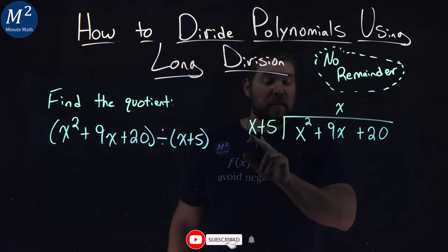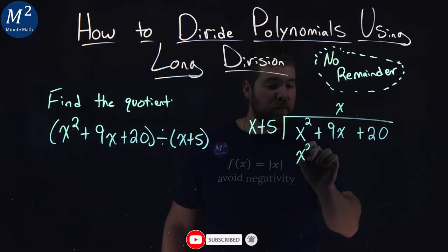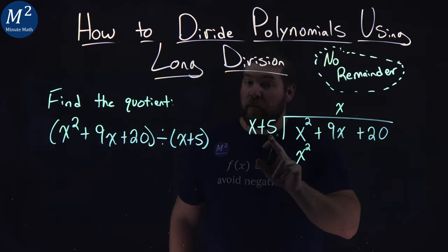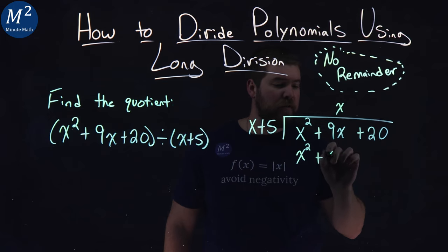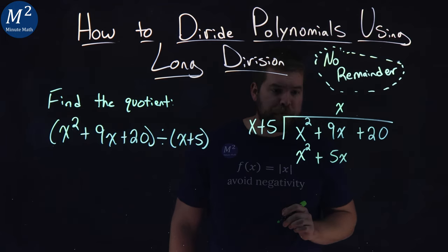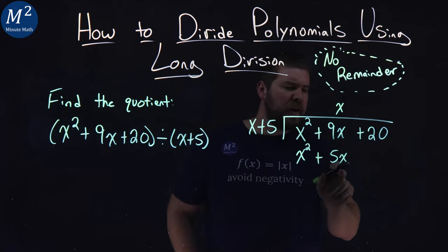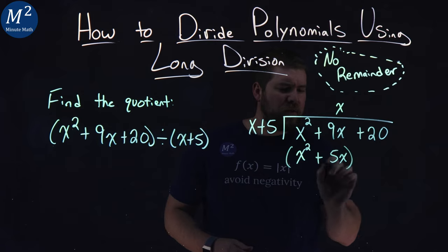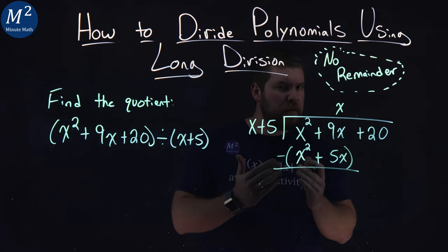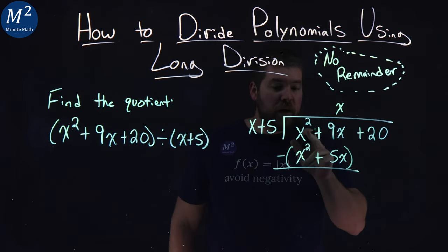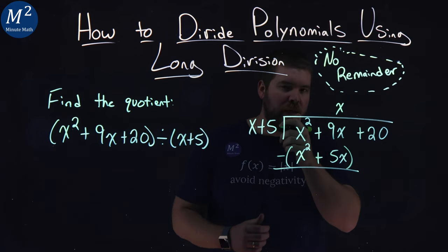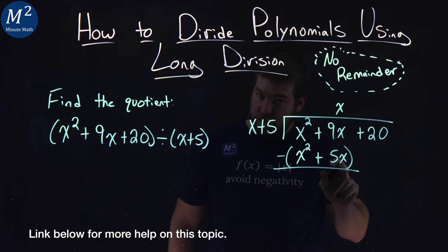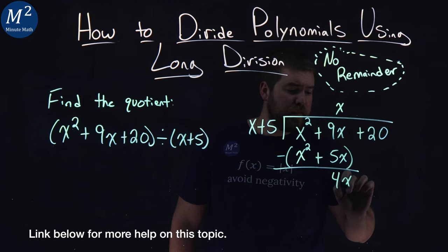x times x gives me x squared. So as I have that solidified, I continue on. x times 5 gives me 5x. Now, it's kind of tricky with a plus right here, plus 5x, but we need to subtract the two. So we write this whole thing as a subtraction and we're eliminating down. x squared minus x squared becomes 0. That's what we wanted. 9x minus 5x here is 4x.